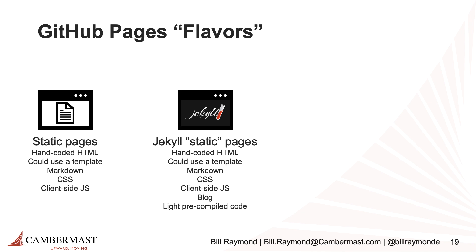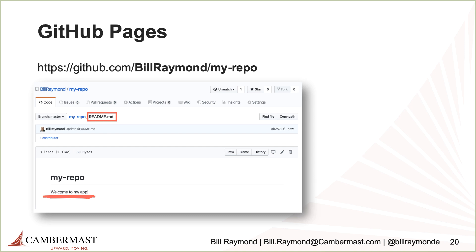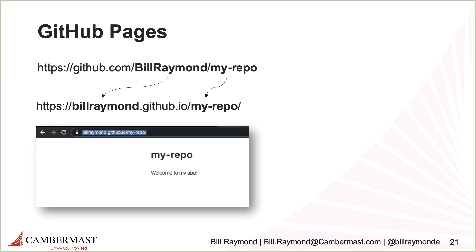What you really want to learn is HTML, markdown, and CSS, but you also want to learn Jekyll, and I'm going to put a big focus on that in future demo videos. Here's a simple example: I have a GitHub repo I created called 'my repo.' At the bottom of the page it says 'Welcome to my app' — that's just the README.md file. I went into the settings and told GitHub to make the master root folder my GitHub Pages page.